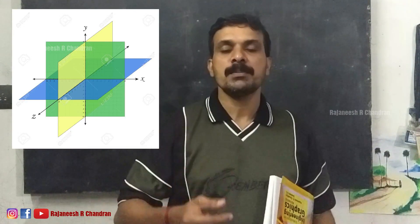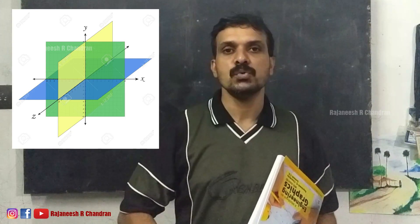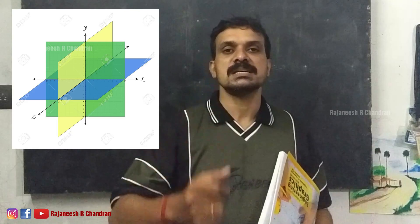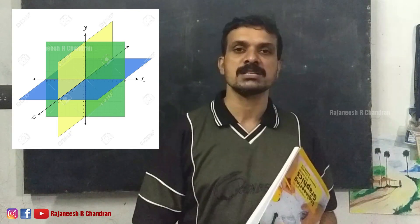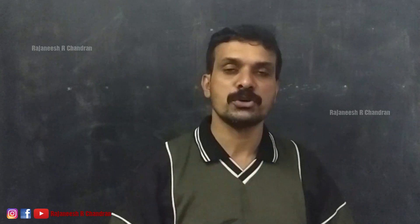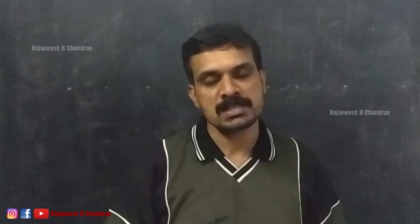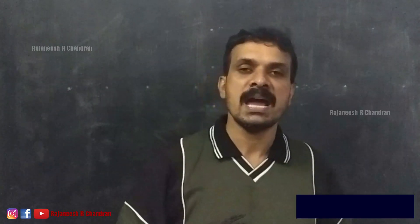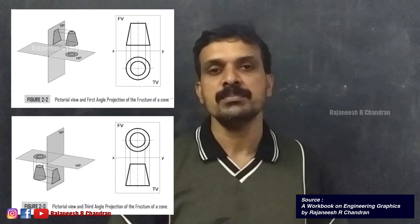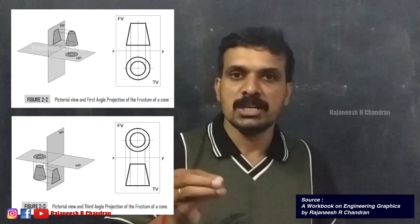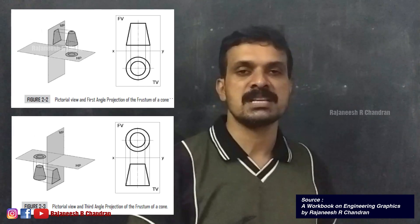With the help of these three planes, we can divide the space into eight compartments known as octants. This system of projection is also known as the octant system. The front view of an object is also known as elevation, and the top view of an object is also known as plan.